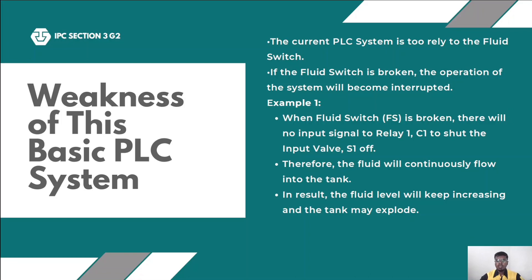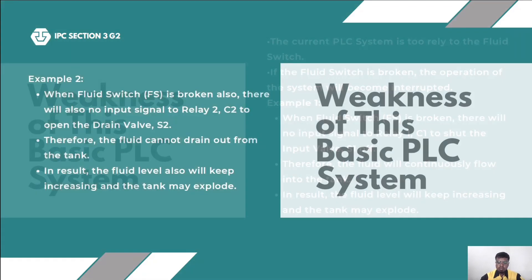My name is Karthik and my material number is CE190125. I will explain the weakness of this basic PLC system. The current PLC system relies on the fluid switch. If the fluid switch is broken, the operation of the system will become interrupted. For example, when the fluid switch is broken, there will be no input signal to Relay 1 to shut down the input valve. Therefore, the fluid will continuously flow into the tank, the fluid level will keep increasing, and the tank may explode.